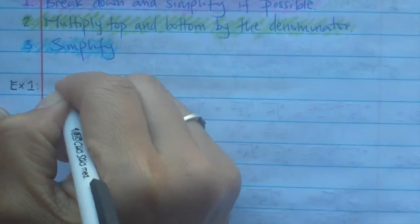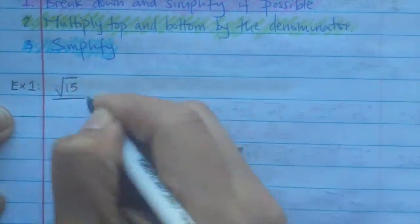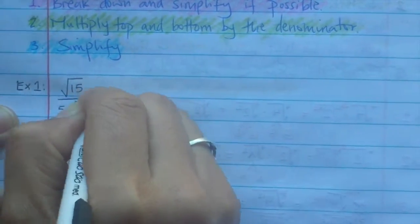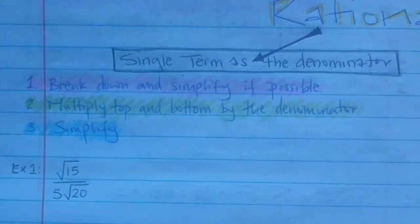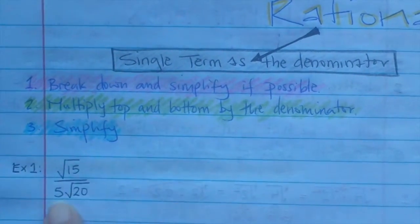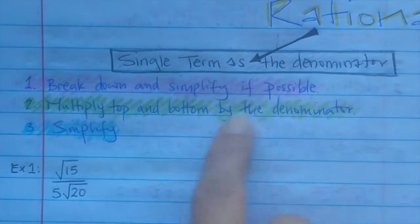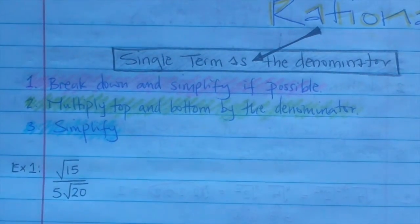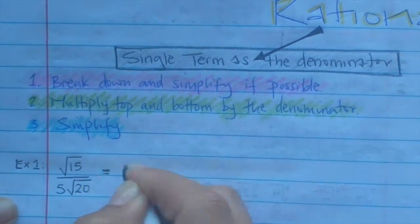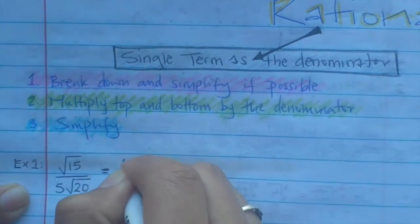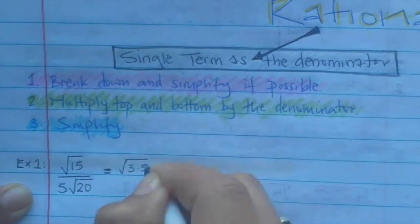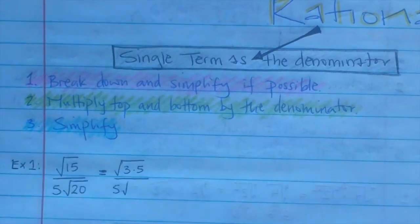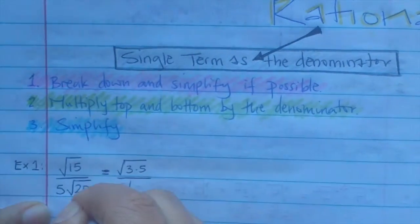Let's say we had radical 15 over 5 radical 20. This is a single term as a denominator — there's no addition or subtraction. The first step is to break down and simplify as much as possible. So the 15 is going to be 3 times 5, and radical 20 is going to be 4 times 5.